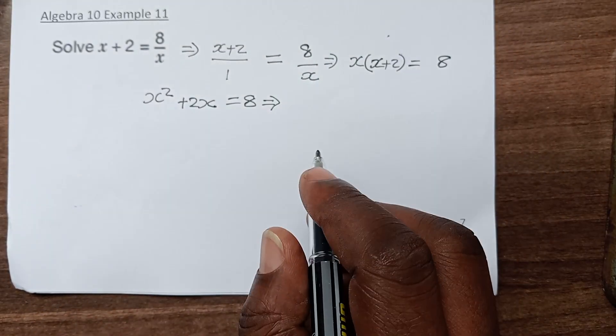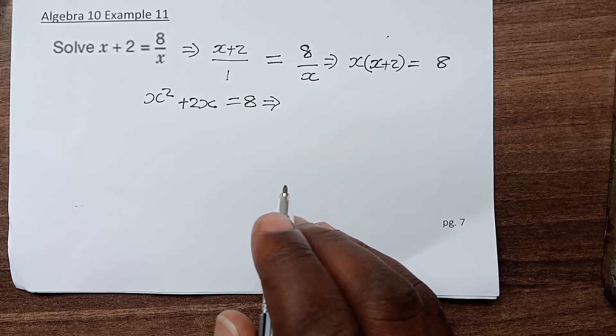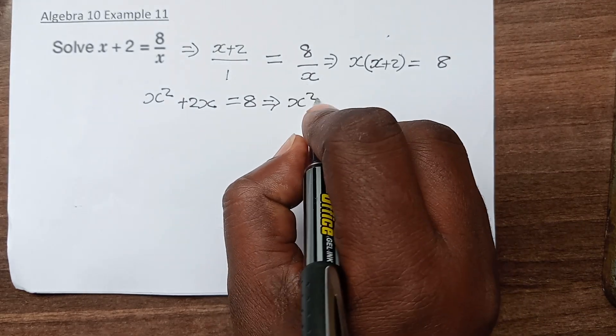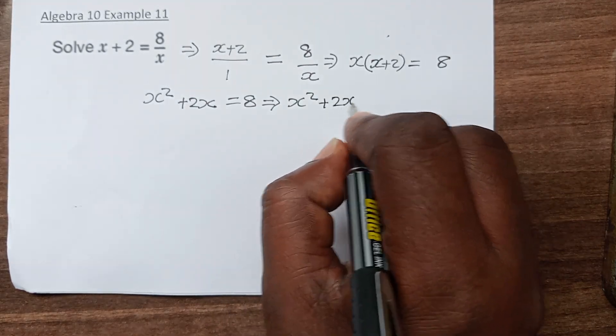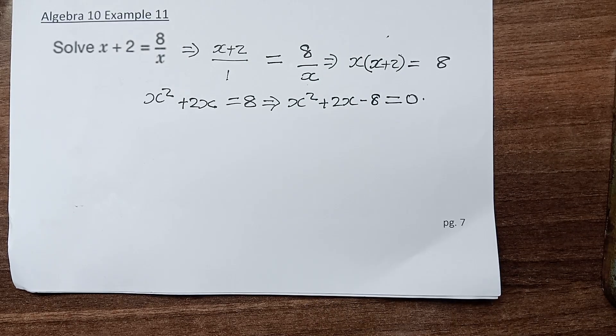To solve any quadratic equation, it has to equal 0. So we bring it across, and we have x squared plus 2x minus 8, which now equals 0.